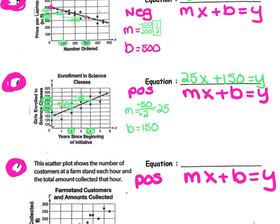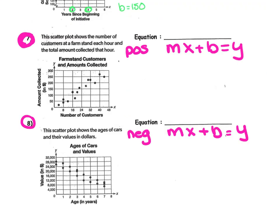Now, looking at 7 and 8, what happens when they don't draw the line of best fit for you? Then it's your job to find the best line of fit on your own. Number 7 states, this scatter plot shows the number of customers at a farm stand each hour and the total amount collected that hour. It's our job to draw a line that represents the line of best fit. But there are a few key points to remember.